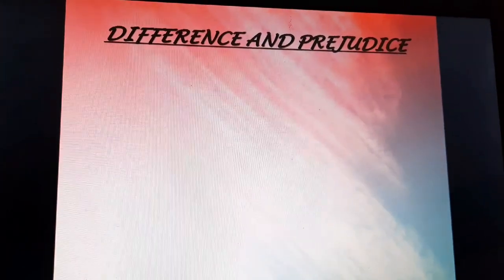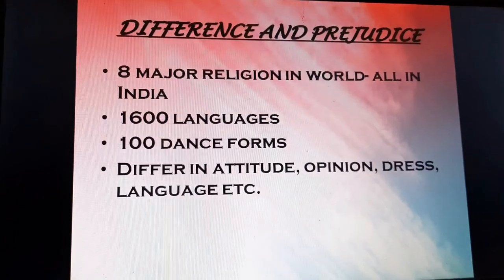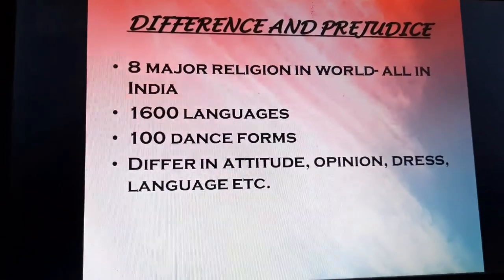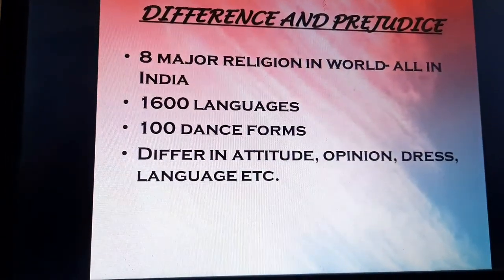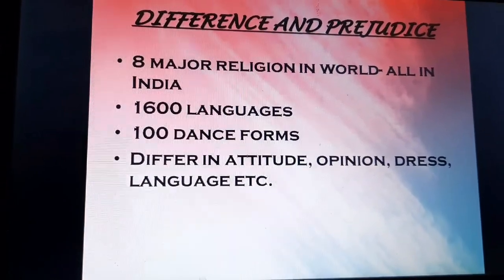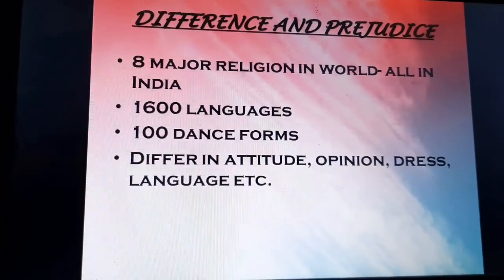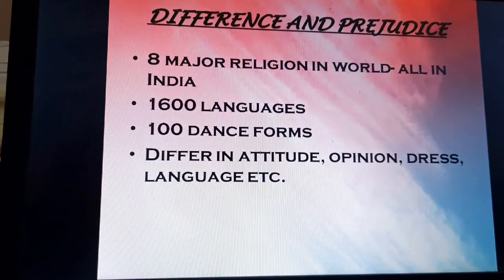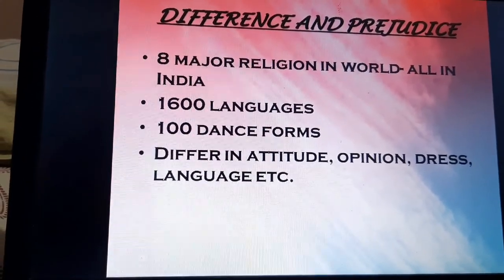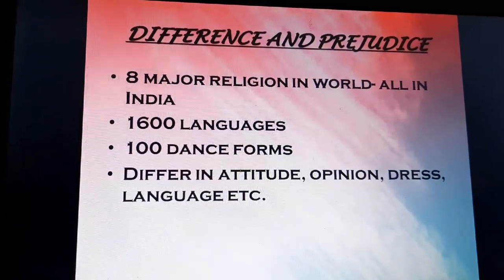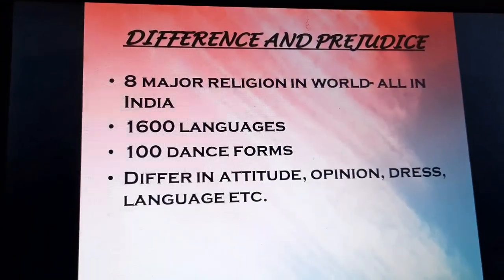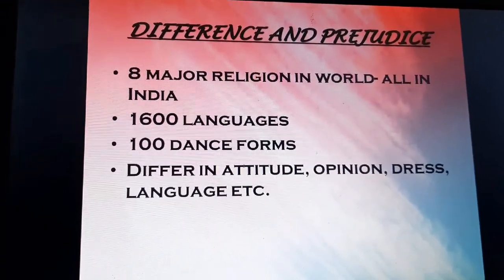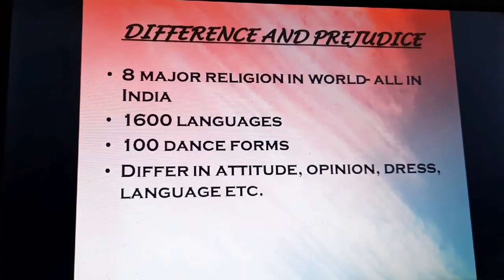Different and prejudiced. India is home to 8 major religions of the world, which are all seen in India. It is also home to 1600 languages and more than 100 dance forms. How do people differ? They can differ in the way they dress up, the food they eat, the language they speak — as we all learned in the last civics chapter. But above and beyond, attitude and opinion also form the foundation for the upliftment of the lower classes.